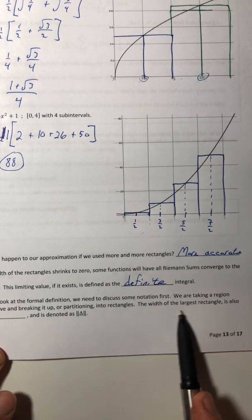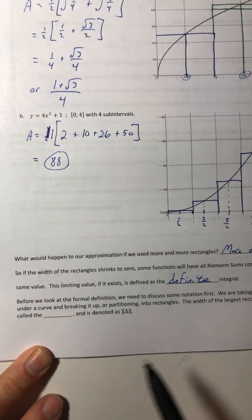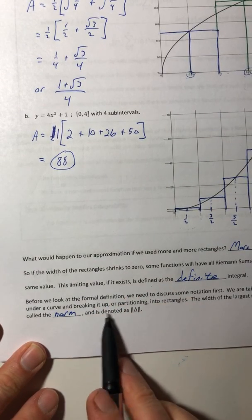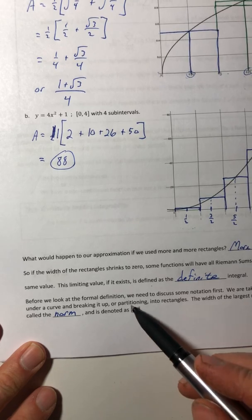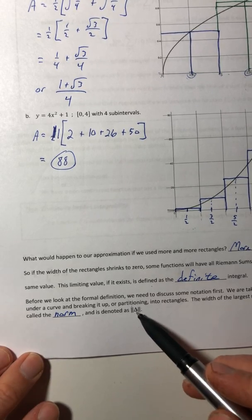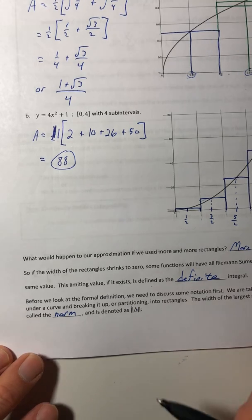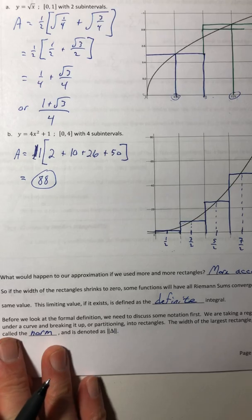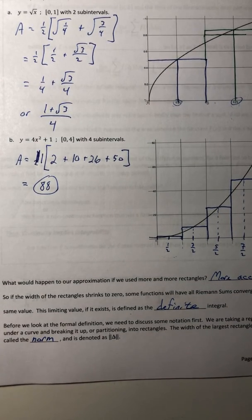So before we look at the formal definition, we need to discuss some notation first. We are taking a region under a curve and breaking it up or partitioning into rectangles. So we took this region and broke it up into different sections. So the width of the largest rectangle is also called the norm and is denoted as double-sided absolute value of that delta. And remember, the delta stood for the partition. All right. In the next video, we'll go ahead and look at the formal definition and then see how to use it.